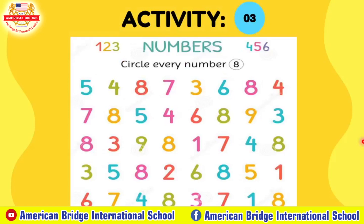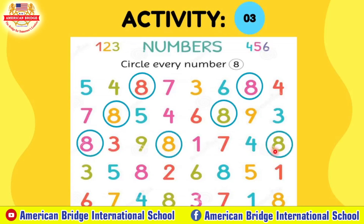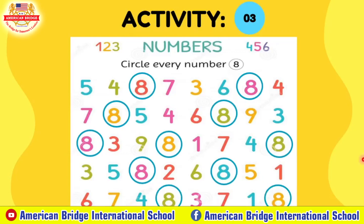Now let's move on to our third activity: circle every number 8. Can you help teacher, everyone? Let's start. There you are — number 8. This one also. How about this one? Correct, 8. How about this? Yes, it is. Correct. Let's find more. Yes, correct. This one is number 8, and this is also number 8. And this one? Yes. And the last — number 8? Correct. So this is our third activity for today.